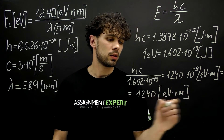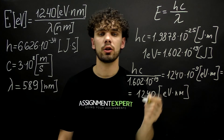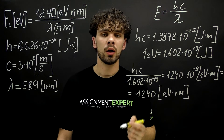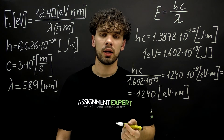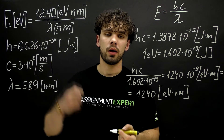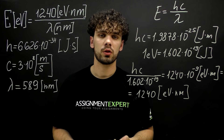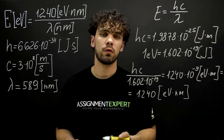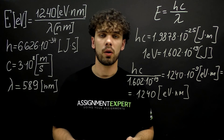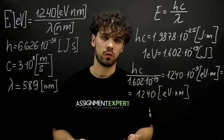And if we put this expression into the numerator of our initial formula, we will get nothing else but this formula. This proves that we can use this formula to find the energy of a photon — not in joules, but in electron volts.